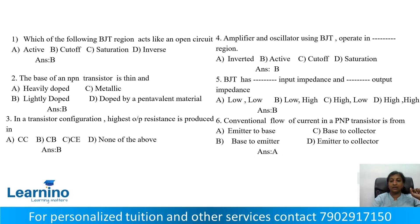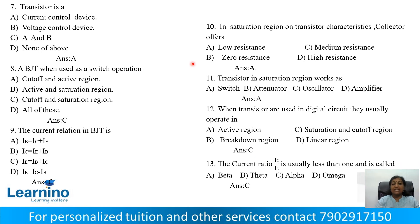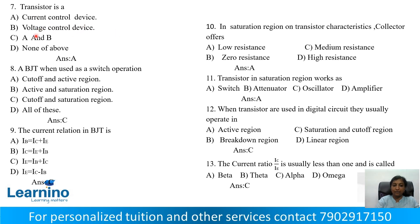Question number 8: A BJT when used as a switch operates in which regions? Option A: Cutoff and Active, Option B: Active and Saturation, Option C: Cutoff and Saturation, Option D: None of these. How many regions are involved?